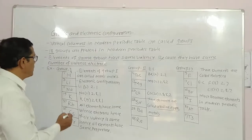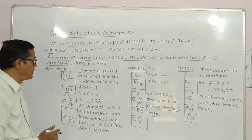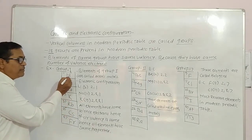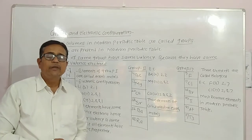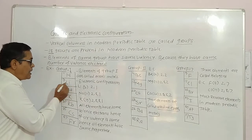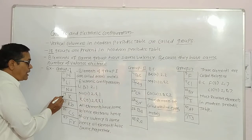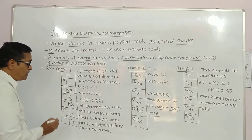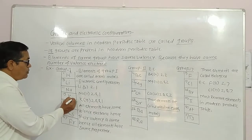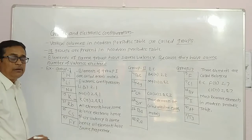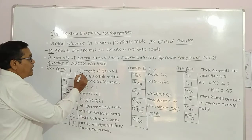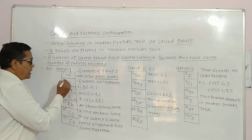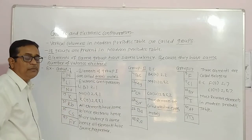We will study three important groups in the Modern Periodic Table. Group 1, also called Group 1A: hydrogen does not have a fixed position in the Modern Periodic Table. Excluding hydrogen, Group 1 starts from lithium (atomic number 3), sodium (11), potassium (19), rubidium (37), cesium (55), and francium (87). Elements of Group 1 are called alkali metals.